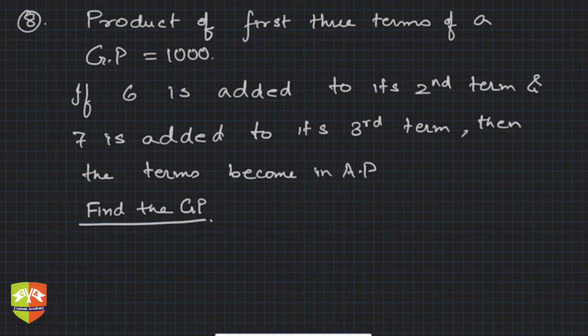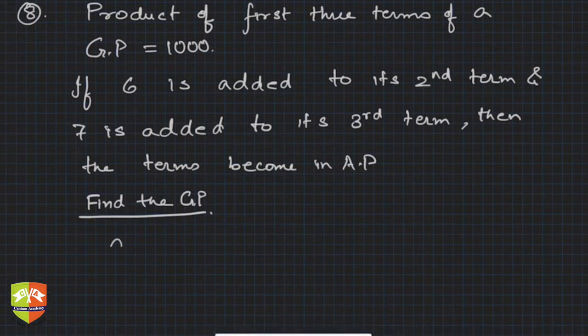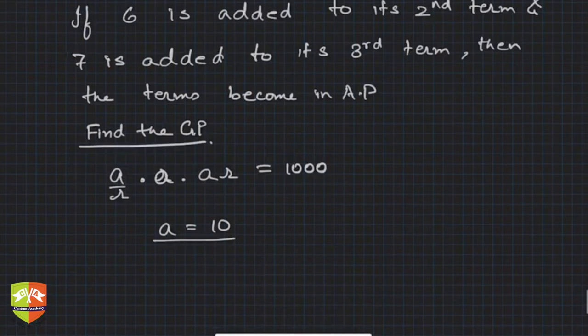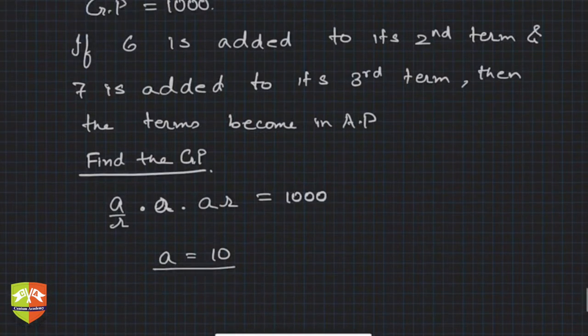Product of first three terms of GP is 1000. You need to take a/r × a × ar - these are the three terms in GP always, and their product is 1000. So what is the value of a? a equals 10. So the second term is 10.